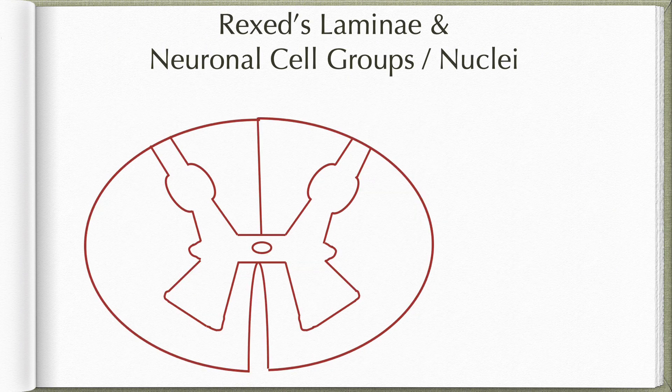The cells in the grey matter are described to be arranged as multiple longitudinal columns of cell groups, described as nuclei, or they are described to be arranged in 10 layers from back to front numbered 1 to 10, which are known as Rexed's laminae. Let us study how the cells are arranged in Rexed's laminae.